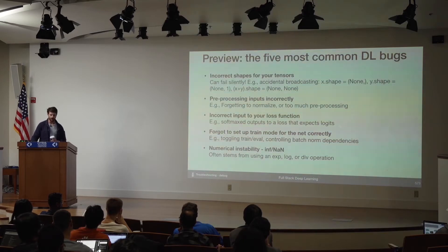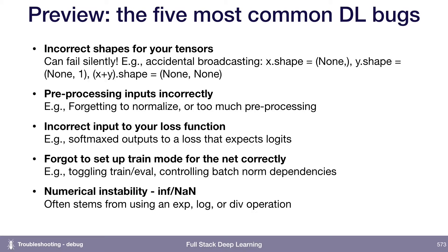Forgetting to set train mode for the network typically happens with batch norm, which is one of the reasons I recommend not using batch norm from the start. And finally, a catch-all for many different types of problems is numerical instability. If you're getting NANs in your output, this usually comes from doing some kind of exponent, log, or division operation somewhere in your neural net code. That's the place I'd start looking for bugs like that.